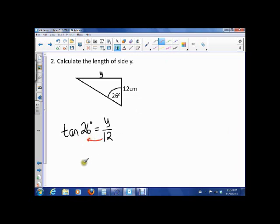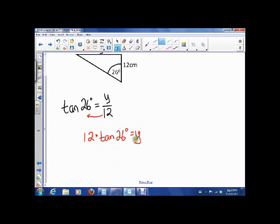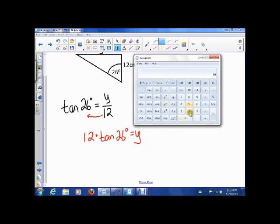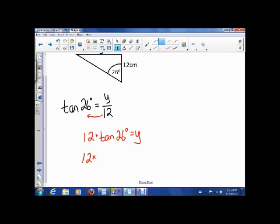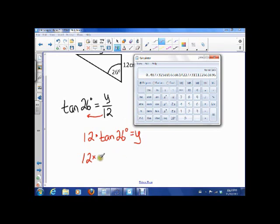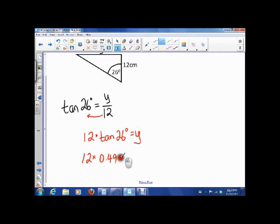This is true, but we would like to get an actual number. So we look at our scientific calculator and input that we want the tan of 26 degrees. On my calculator, I have to input 26 first and then hit tan, and the result is 0.4877. I want to keep it to two decimal places, so that means this is going to be 12 times, and tan 26 was 0.49.